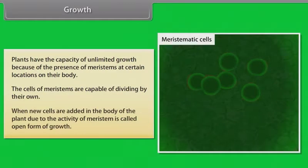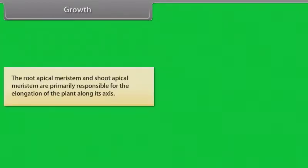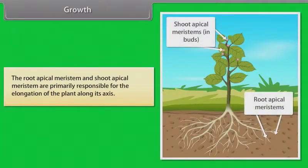The cells of meristems are capable of dividing on their own. When new cells are added in the body of the plant due to the activity of meristem, it is called open form of growth. The root apical meristem and shoot apical meristem are primarily responsible for the elongation of the plant along its axis.